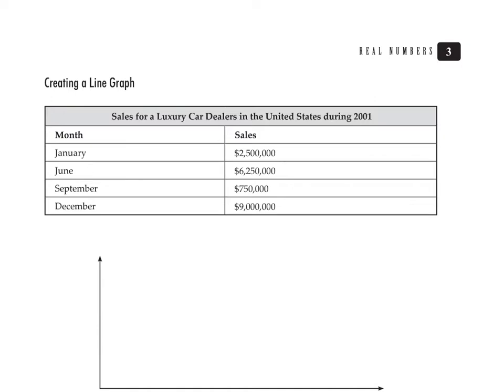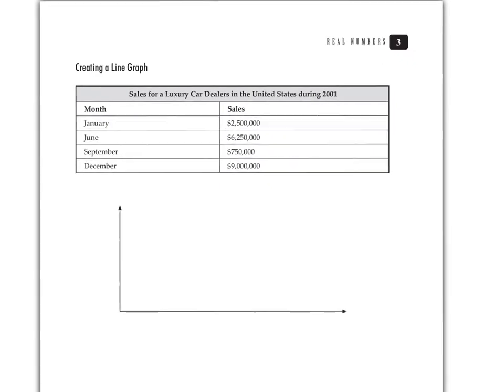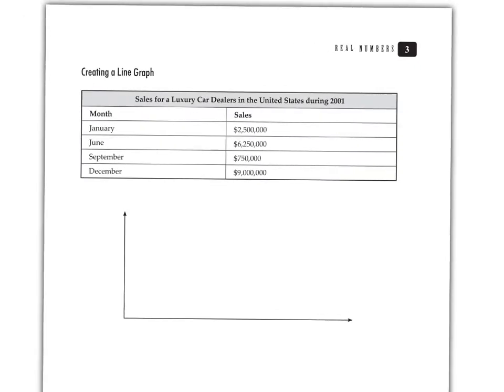The next page we have create a line graph, which is a similar idea. It's just another way to take information from a table and put it into a useful kind of graph. So again, we're going to put the month down here on the x-axis. So we have January, June, September, and December.